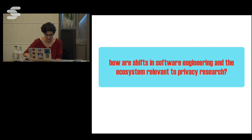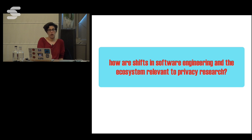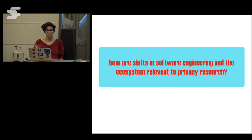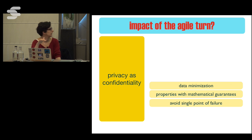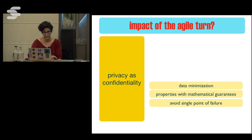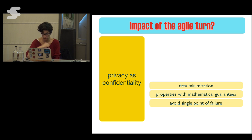Now I want to move back and think about what happens to privacy research within this environment. I'll give examples from the different paradigms we discussed yesterday. First, privacy as confidentiality: data should only flow to intended parties, you should minimize data collection, guarantees should be mathematically proven, and you should avoid single points of failure — no central entity should hold all your data.